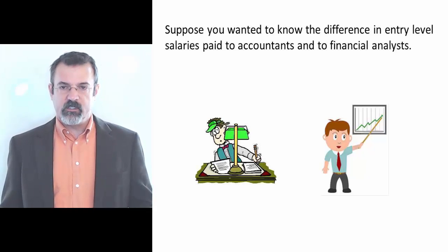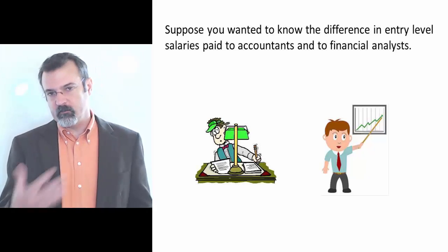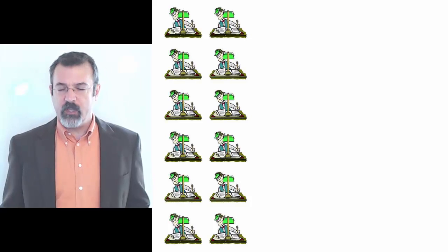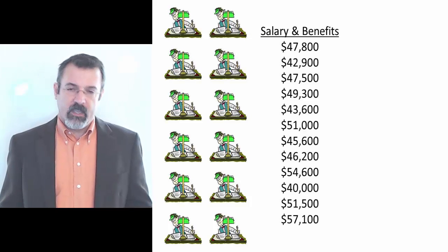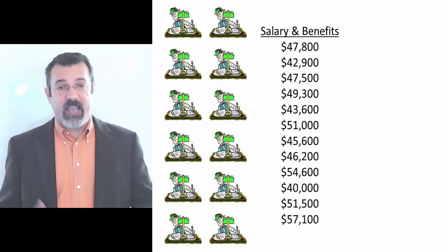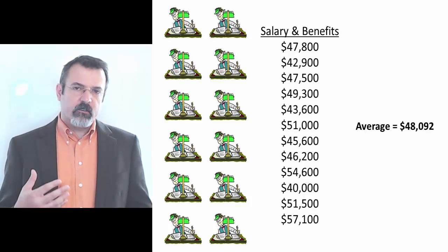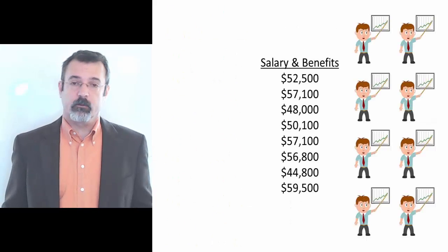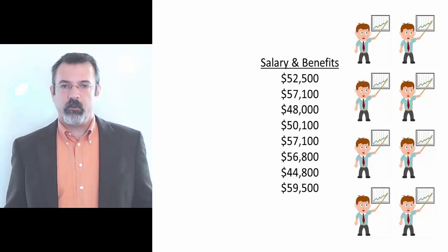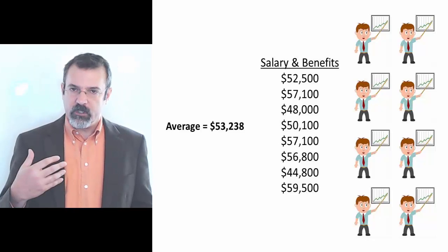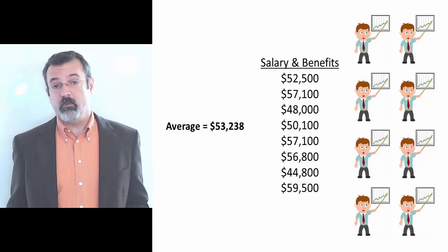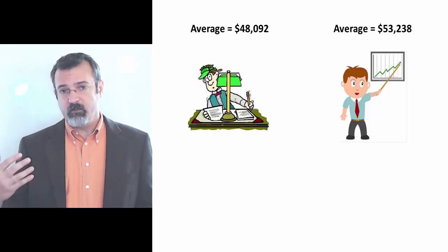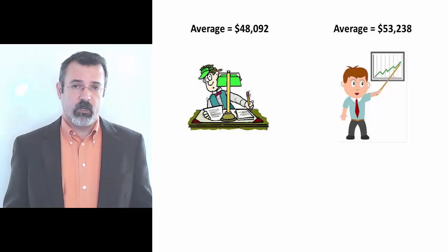Suppose you want to know the difference in salaries paid to accountants versus financial analysts. You get a sample of 12 accountants and find their average salary is $48,000. You then find a sample of eight financial analysts and calculate an average of $53,000. Comparing these two averages, the average for the accountants is $48,092 and the average for the financial analysts is $53,238.